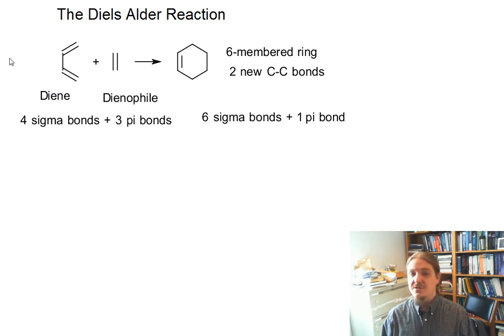So we're exchanging two pi bonds for two sigma bonds. That's really going to be the thermodynamic driving force for this reaction, even though there maybe is an entropic penalty to go from two molecules to one molecule.